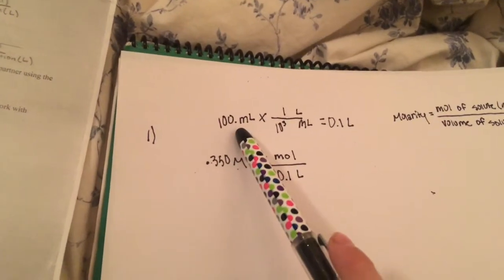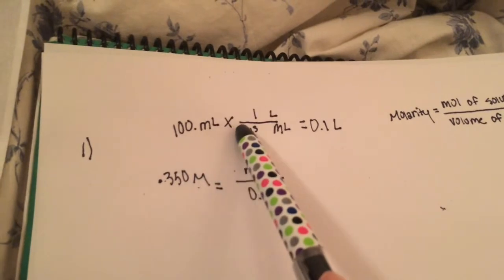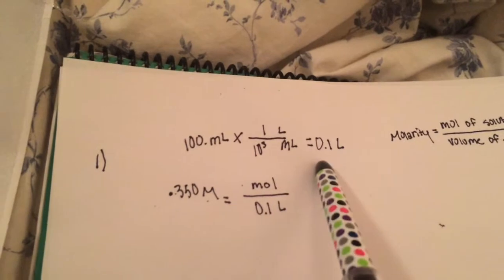We're given a hundred milliliters. We have to convert it to liters. We put a hundred milliliters here and then divide it by 10 to the third or a thousand and we get 0.1 liters.